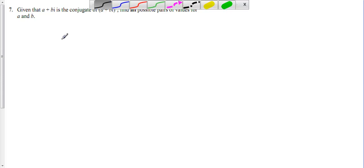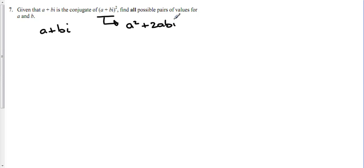Now first of all, if a plus bi is the conjugate of this, then if we first of all expand this. If you look to the video for question 6, you remember that that comes out as a squared plus 2abi minus b squared. If we just rearrange this into the real part and the imaginary part, then we can see that...